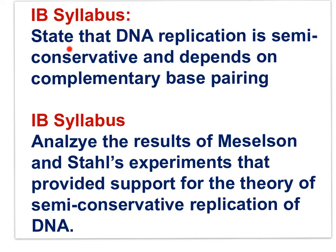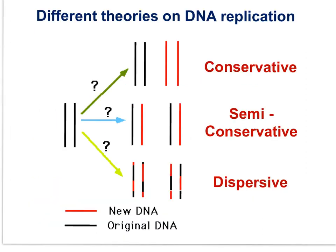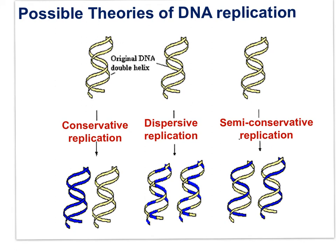The IB syllabus statements: state that DNA replication is semi-conservative and depends on complementary base pairing; analyze the results of Meselson and Stahl's experiments that provided support for the theory of semi-conservative replication of DNA. DNA replication wouldn't have to be semi-conservative — there are other possibilities, such as conservative, where the parental strands remain together with the new strands paired together, or dispersive. In conservative replication, the original template strands remain together while the new strands join together.